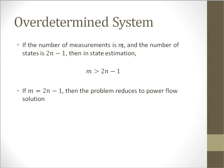If we have m measurements and the number of states is 2n minus 1, then m must be greater than 2n minus 1. If m becomes equal to 2n minus 1, then the problem reduces to power flow solution.